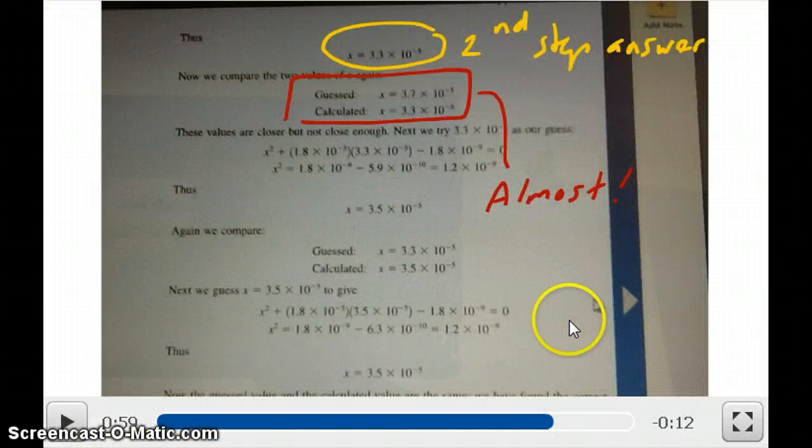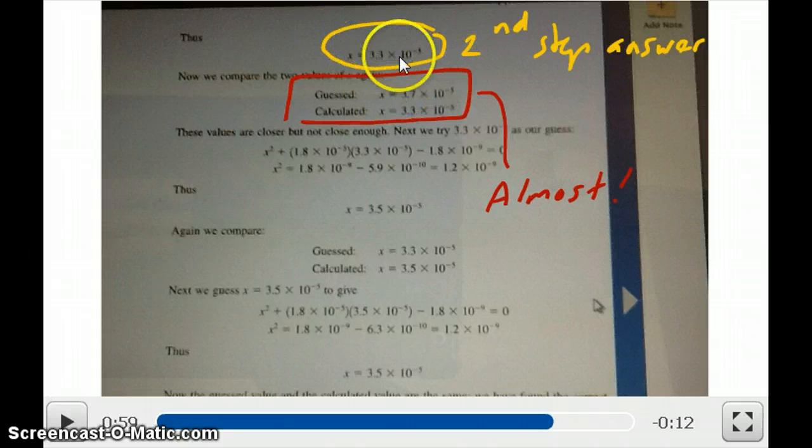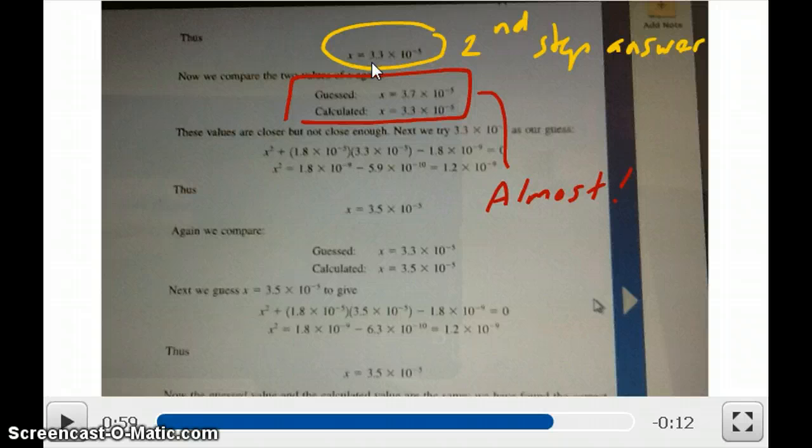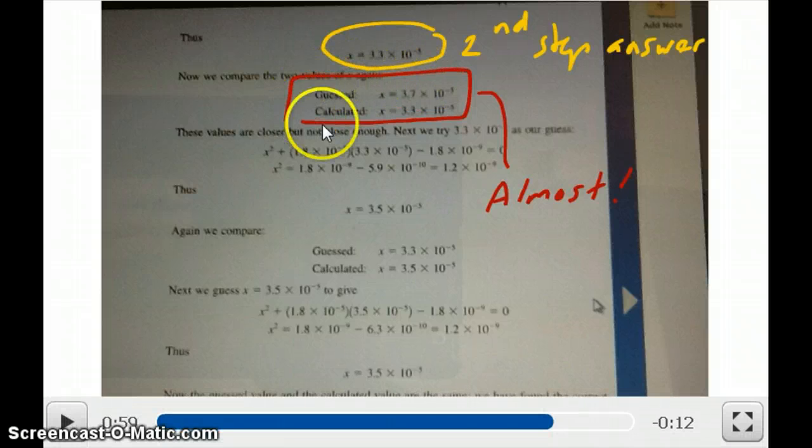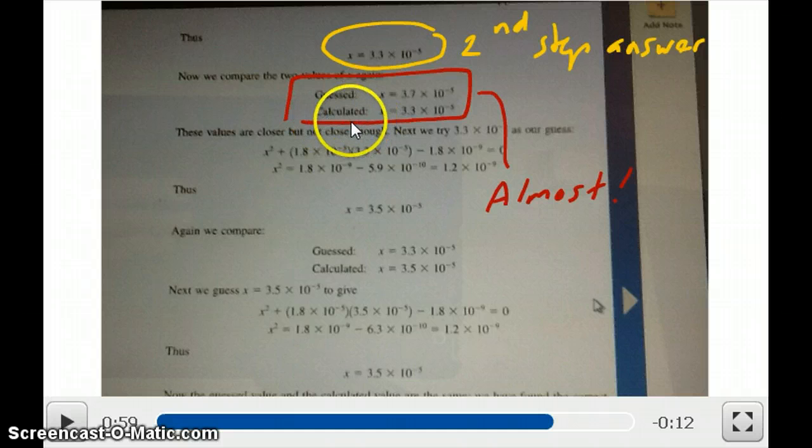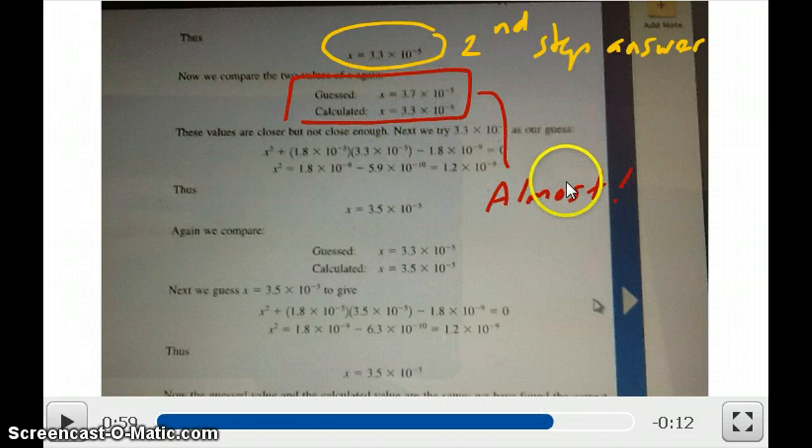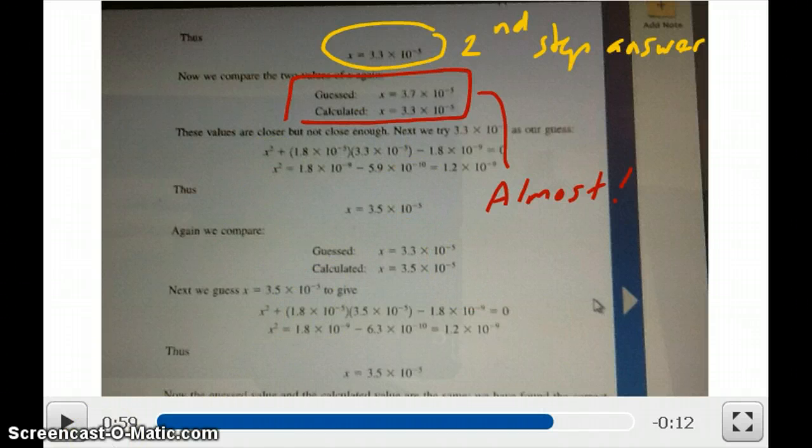If you do that, what you get is this number right here, which is circled in yellow, and that is the solve x value, or the solution for the second step, which is 3.3 times 10 to the minus 5. And again, if you look at the two numbers, the guess versus the solve, or the calculated, you see that they're getting closer now. One is 3.7, the other one is 3.3. So it's getting closer, so I say almost here, but we're not quite there yet. So you have to go ahead and keep repeating this step.